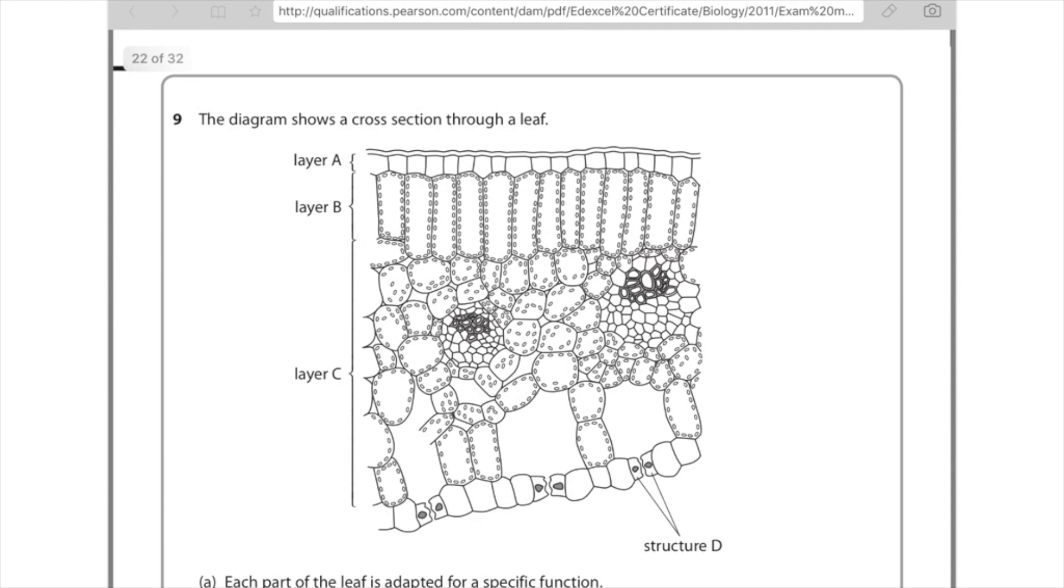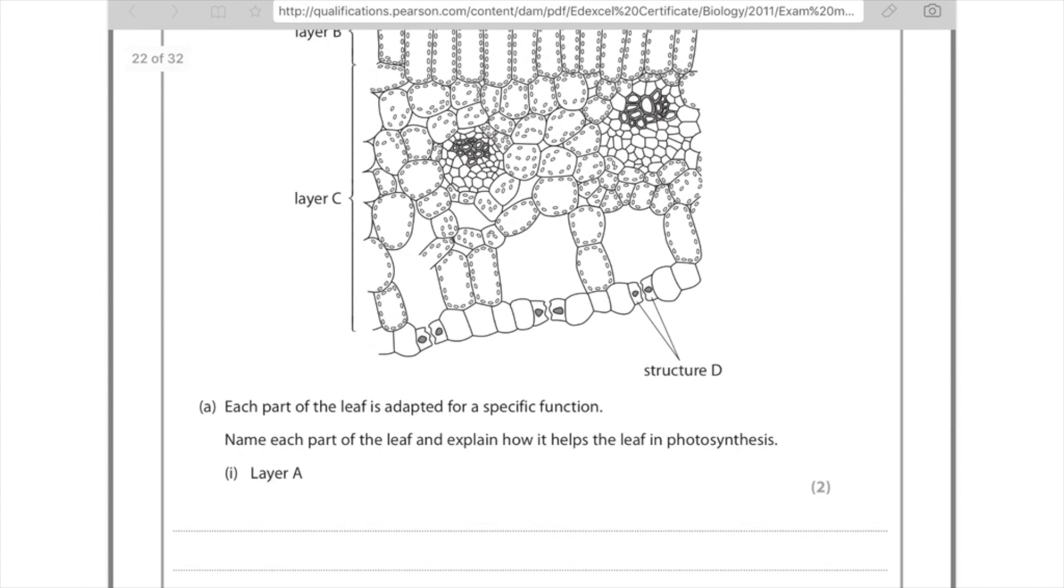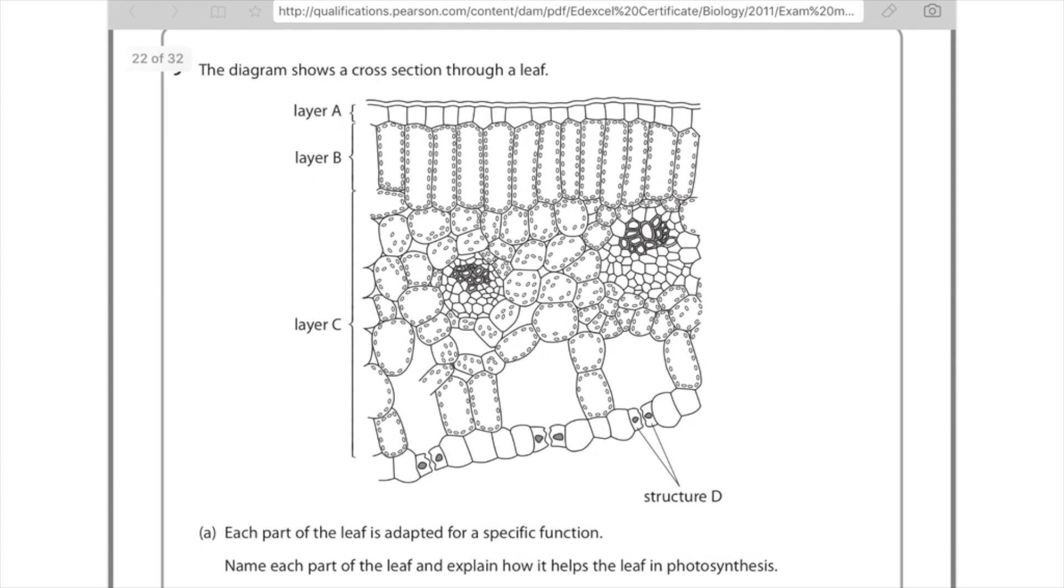Nine. The diagram shows a cross-section through a leaf. Each part of the leaf is adapted for a specific function. Name each part of the leaf and explain how it helps the leaf in photosynthesis. So crucially, do both. Make sure you're naming and giving an explanation of how it helps. So layer A, it's not pointing at the waxy cuticle. It's definitely pointing at the upper epidermis. And you must state the word upper to get the mark. Now, remember in my video I just mentioned that you don't have to say too much. You just want to say it's transparent to allow light through.